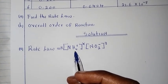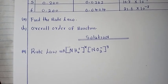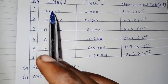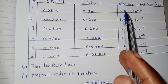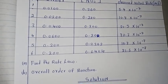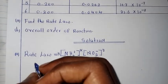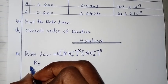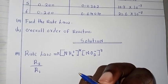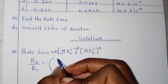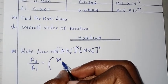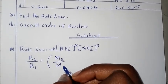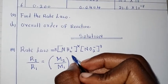First of all, we find the order of reaction for ammonium ions. From the table, we use experiments one and two and their observed initial rates. So observed initial rate two divided by observed initial rate one equals the molar concentration for reaction two over the molar concentration for reaction one, all to the exponent x.